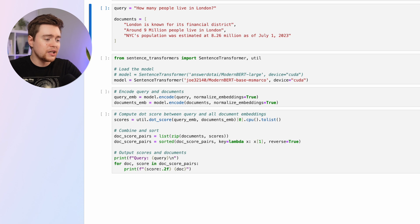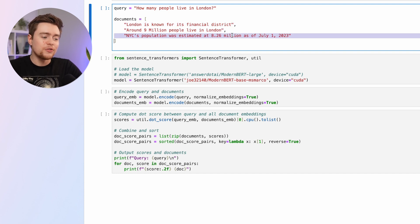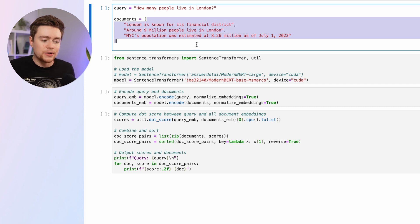Here I have one query: 'How many people live in London?' and three short possible documents where two mention London and one mentions New York. We're trying to find out which document is the best fit for our query. This is basically something similar to the RAG use case I showed you before.